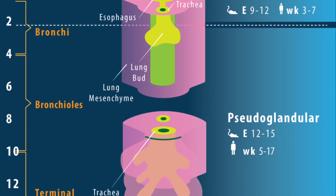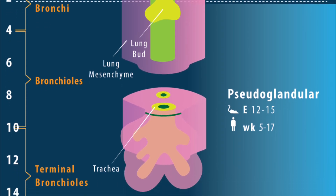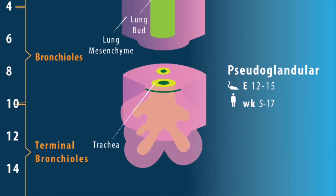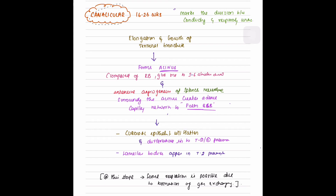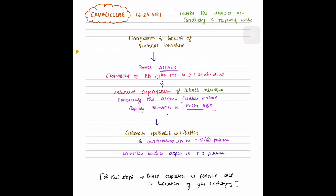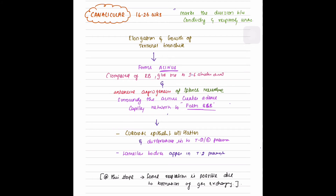At the end of the pseudo-glandular stage, the first 16 generations of airways up to terminal bronchioles and pre-acinar vascular structures are formed. The next stage is the canalicular stage, which lasts from 16 to 26 weeks. It marks the division between the conducting and respiratory zones. Elongation and growth of terminal bronchioles forms the acinus, composed of respiratory bronchioles giving rise to three to six alveolar ducts. Intensive angiogenesis of splanchnic mesenchyme occurs, creating a dense capillary network to form the blood-gas barrier.